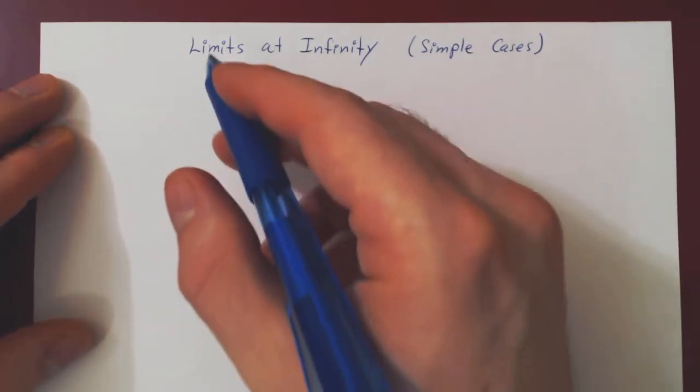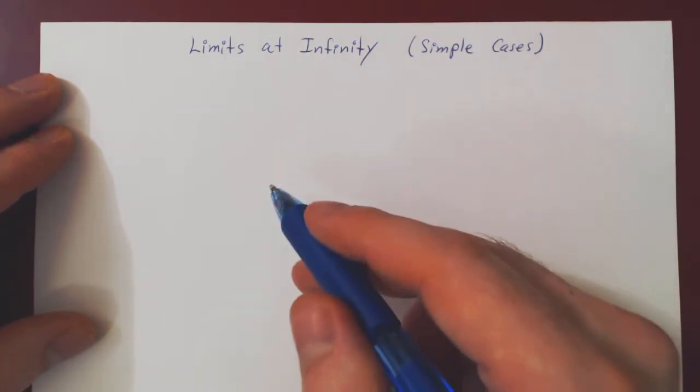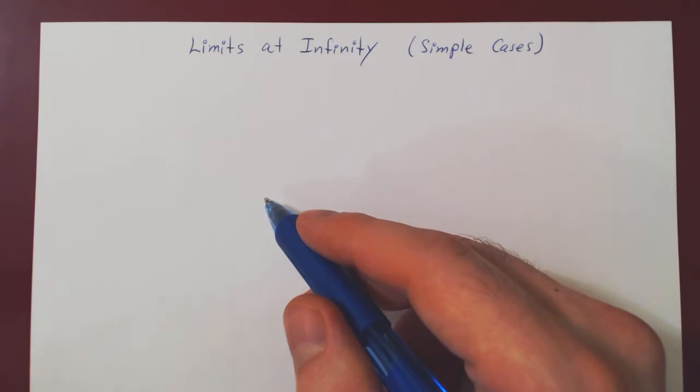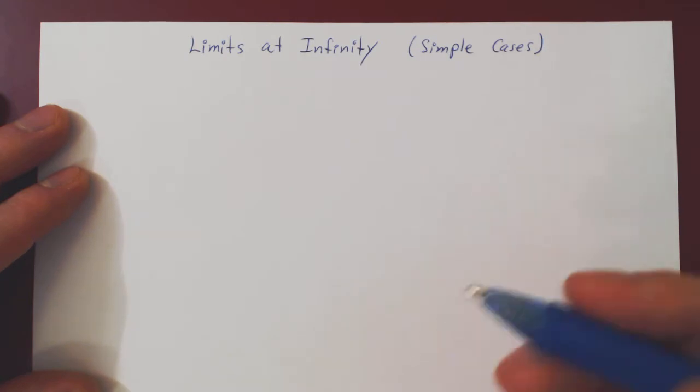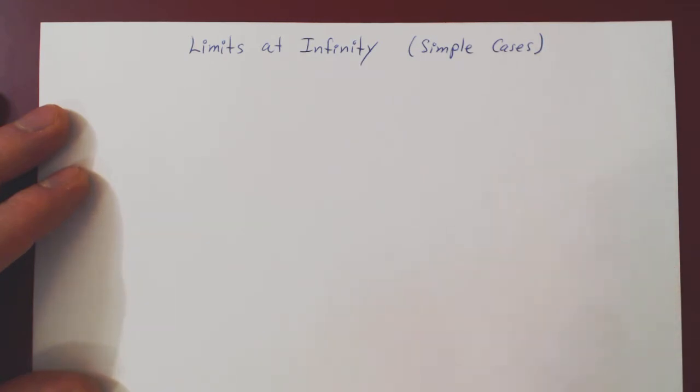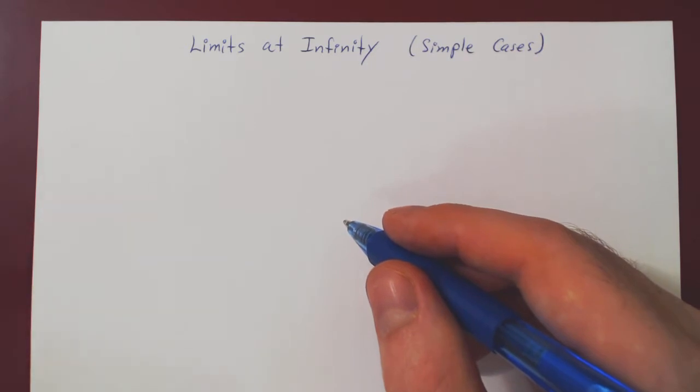Okay, so in this video we want to review limits at infinity, but only simple cases. And you'll understand why when we try to find the area under a curve using limits of Riemann sums. So this review will come in very handy. And I won't use x, I'll use n. Again, the variable doesn't matter, but I'll use n because we will use n later. So you can think of those as just sequences.